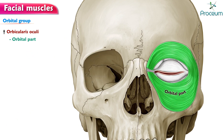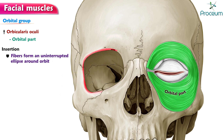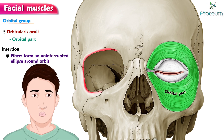Orbital part. Origin: nasal part of frontal bone, frontal process of maxilla, and medial palpebral ligament. Insertion: fibers form an uninterrupted ellipse around the orbit. Function: closes the eyelids forcefully.